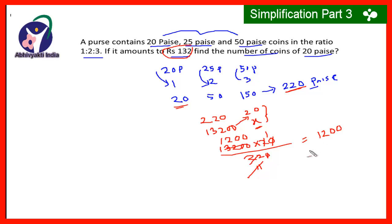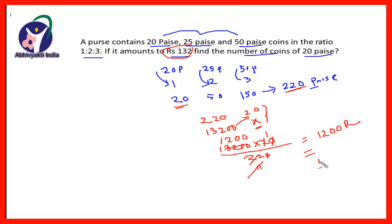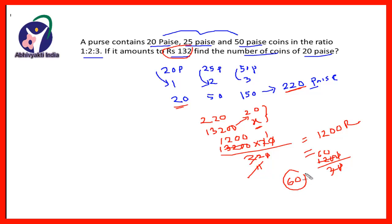The result is 1200 paise. So when the 20-paise coins amount to 1200 paise, how many coins should there be? 1200 ÷ 20 — the zeros cancel, giving 60. So there should be 60 coins of 20 paise.